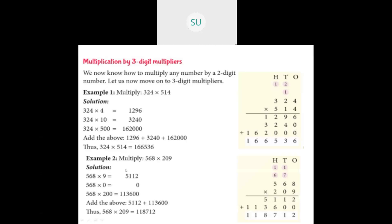Here is another example: 568 multiplied by 209. First we multiply 568 with 9 in the ones place and get 5,112. Then the tens digit of the multiplier is 0, and any number multiplied by 0 is 0. Then we multiply 568 into 200 and get 1,36,000. Adding 5,112 and 1,36,000 gives 1,18,712.